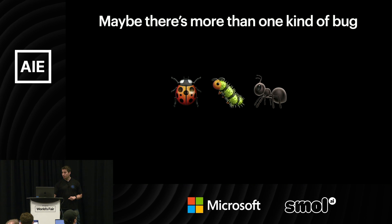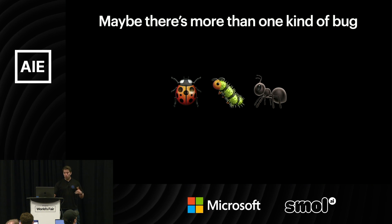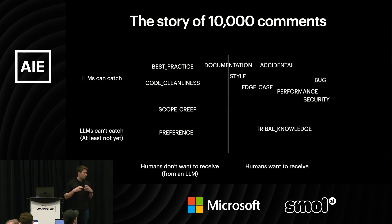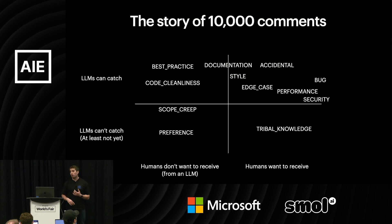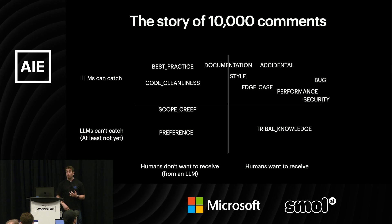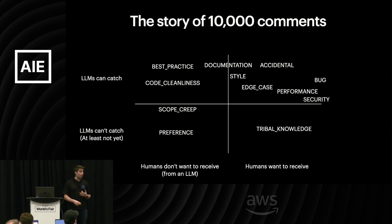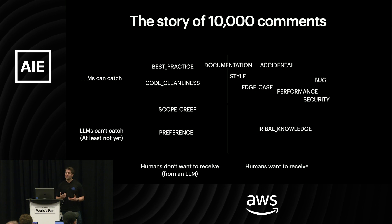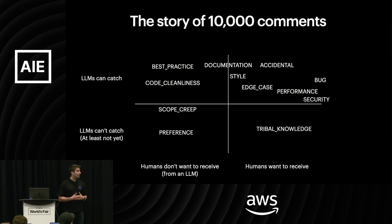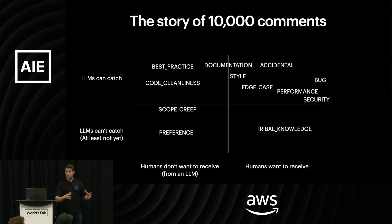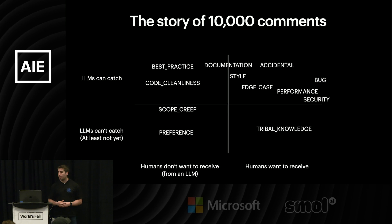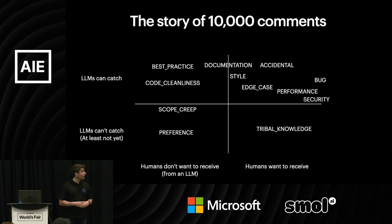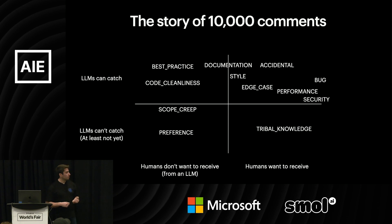What we went ahead and did was take 10,000 comments from our own codebase and from open source codebases, and we fed them to various LLMs and asked them to categorize them — not just once, but quite a few times. Then we summarized those comments. And what we ended up with was actually this chart.